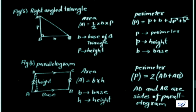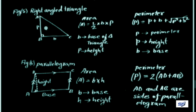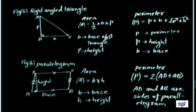For a right-angle triangle, the area formula changes. The area of a right-angle triangle is A = (1/2) × base × height, where B is the base and P (perpendicular) is the height of the right-angle triangle.